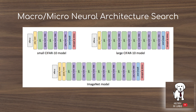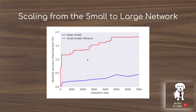An important concept in neural architecture search is the distinction between macro and micro search. In these experiments, the searched cell is plugged into a small CIFAR-10 model, and then scaled up by repeating the cell in a new macro architecture for evaluation. For ImageNet it's scaled up further. The cell being searched is the green cell, while all other cells are hard-coded by human designers. The chart shows how the small and large network performances are correlated through this internal cell design.